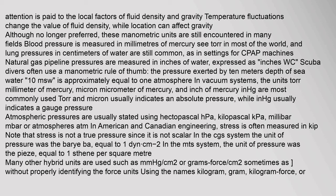Blood pressure is measured in millimeters of mercury (mmHg) in most of the world, and lung pressures in centimeters of water are still common, as in settings for CPAP machines. Natural gas pipeline pressures are measured in inches of water, expressed as inches Wc. Scuba divers often use a manometric rule of thumb: the pressure exerted by 10 meters depth of sea water (10 mSW) is approximately equal to one atmosphere. In vacuum systems, the units torr, millimetre of mercury, micron (micrometre of mercury), and inch of mercury (inHg) are most commonly used. Atmospheric pressures are usually stated using hectopascal (hPa), kilopascal (kPa), millibar (mbar), or atmospheres (atm).